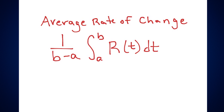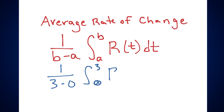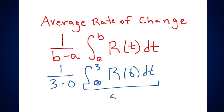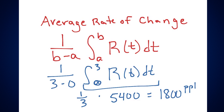Substituting in our time interval, this would be one over (three minus zero), integrating from zero to three of our rate of change formula. We've already determined that integral equals 5,400 people. Multiplying by one-third, we are dividing our total amount of people by the total number of hours we allow people in, which gives us 1,800 people per hour.